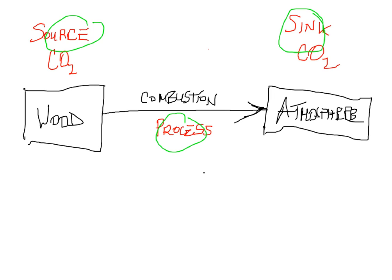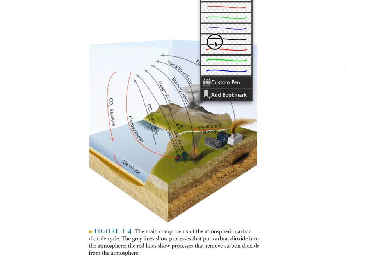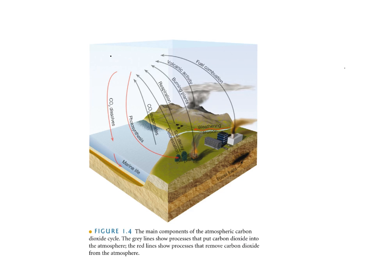Now, of course, what makes this more complicated is that there are a number of source process sink triples active in various parts of the Earth's system at various times. And we've already seen one example of this. For example, this is an image I've shown you before. It's from your textbook. And you can see that there are a number of different source process sink triples that are visible in this diagram.